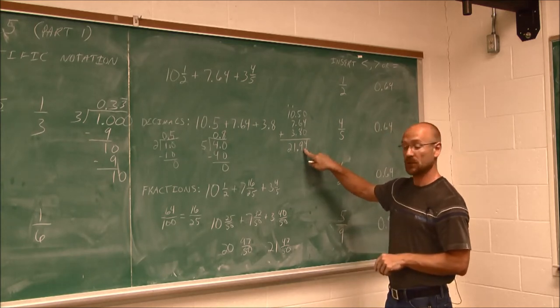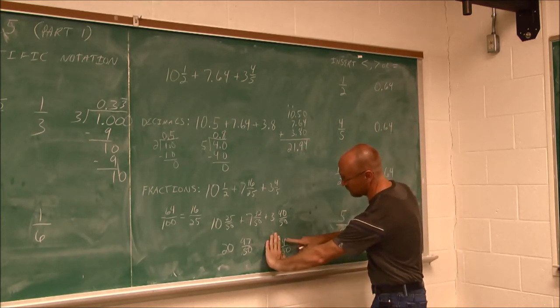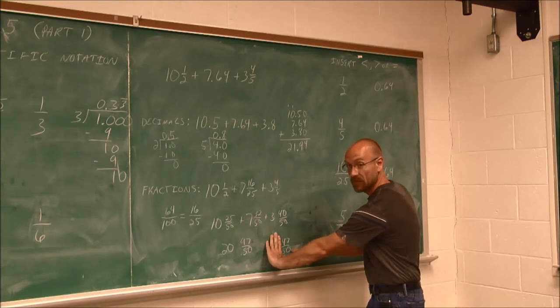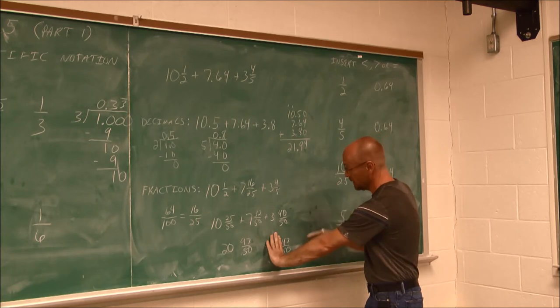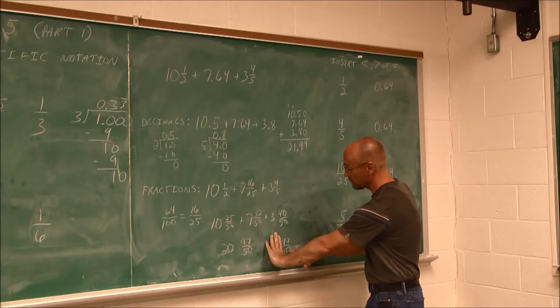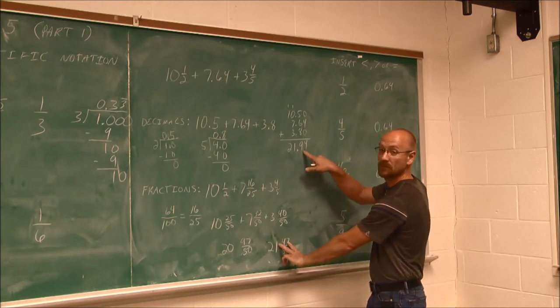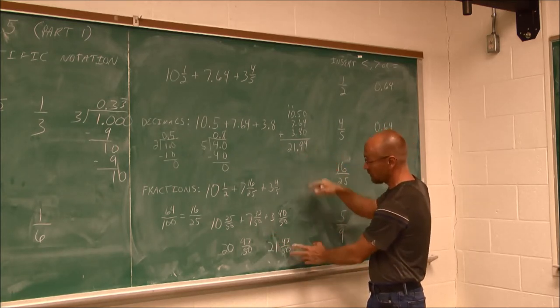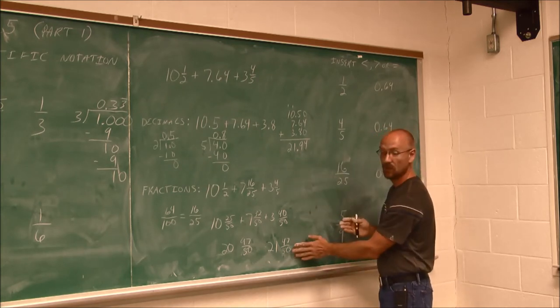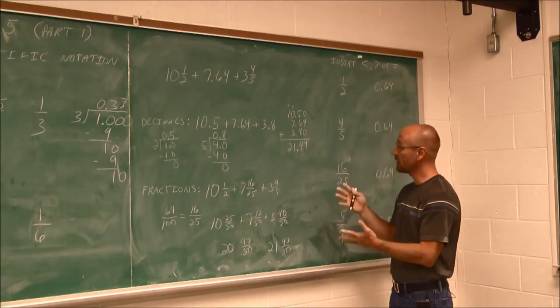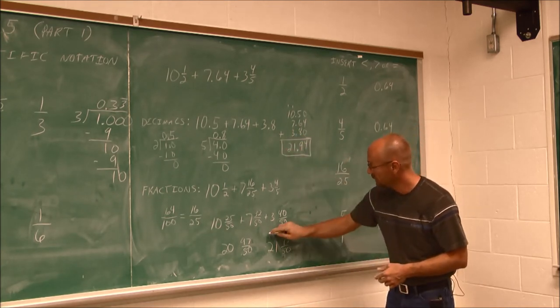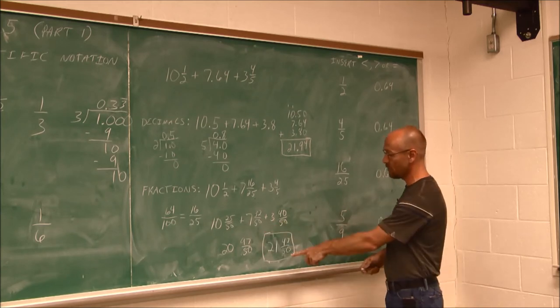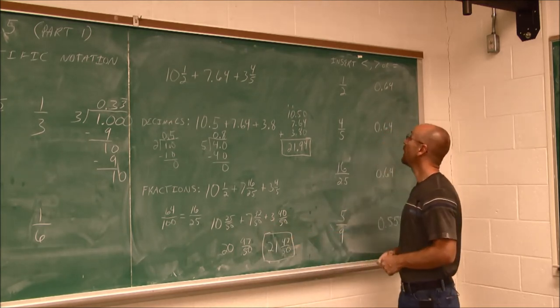This is 94 one hundredths. 47 fiftieths, if I double this, I'll have the same denominator as one hundredths. So I want to make this over 100. I just double both of these. 50 times 2 is 100. 47 times 2 is 94. So this is 94 one hundredths. They are equivalent. One's written as a decimal. One's written as a fraction. We can do it both ways, and we still get equivalent values.